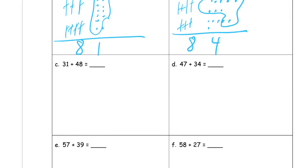31 plus 48. So how many tens do I need? One, two, three and one. For 48 I need one, two, three, four tens and one, two, three, four, five, six, seven, eight ones.